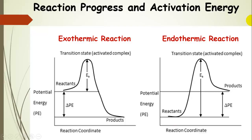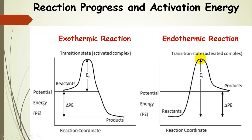For an endothermic reaction, the situation is similar but different in key ways. The reactants are lower in energy than the products, so reactants must overcome a much larger activation energy hump to reach products. This results in a positive change in energy — a positive delta H. The key takeaway is that the activation energy is a much larger amount of energy for an endothermic reaction than for an exothermic reaction.